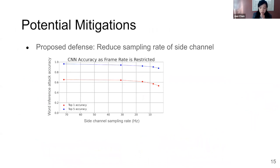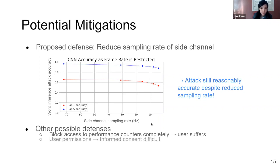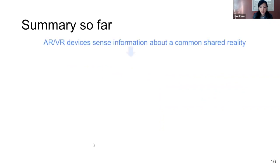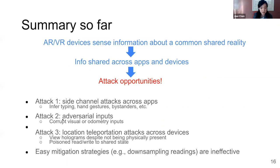Regarding mitigations: for example, reducing the sampling rate of a side-channel. On the x-axis is the sampling rate, and the y-axis is the attack accuracy. The attack accuracy doesn't decrease much as you lower the sampling rate, meaning obvious defenses aren't effective. We have some ideas for other defenses like blocking access or providing user permissions, but we need more sophisticated methods. We've shown some attacks work but don't have strong mitigation strategies yet — that's an opportunity for further collaboration.